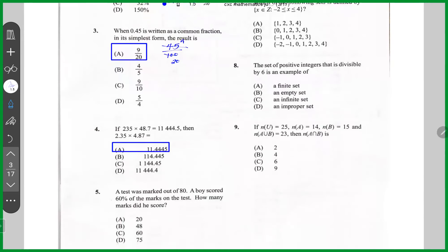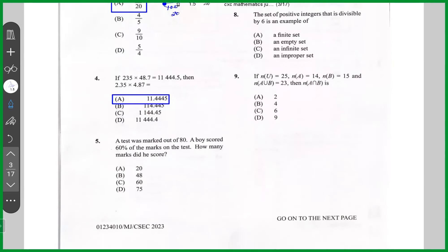Question number six, it says a test was marked out of 80. A boy scored 60% of the marks on the test. How many marks did he get? Well, this young one got 60%, which is 60 over 100, of the total marks, which is 80. This is 48 marks. So the answer here is B.